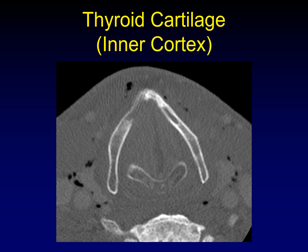When evaluating the thyroid cartilage for erosions, it's very important to distinguish whether only the inner cortex is eroded, or whether both the inner and outer cortices are eroded and tumor has spread outside the cartilaginous boundaries of the larynx — it makes a big difference for staging. Here's an example where the outer cortex is intact but the inner cortex has been eroded by tumor. You can even see a little bit of sclerosis adjacent to the area of erosion.